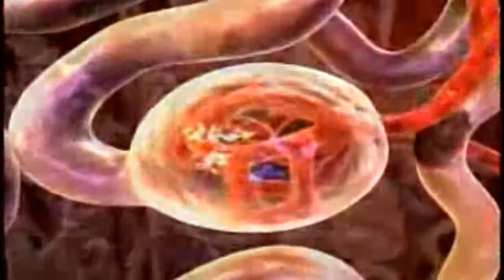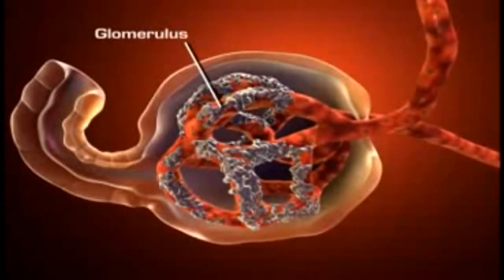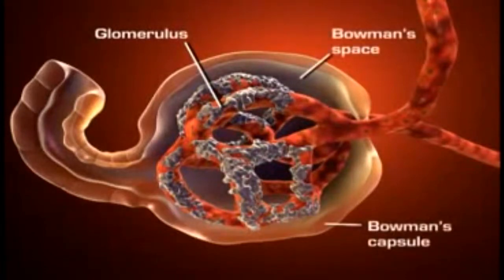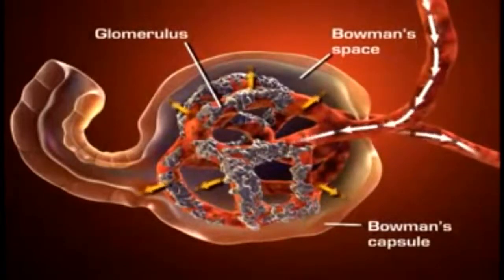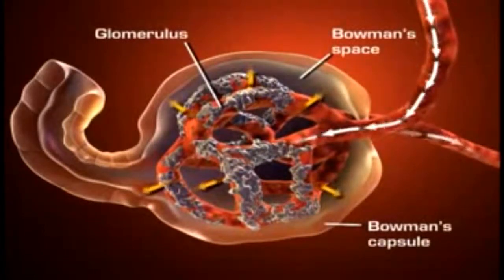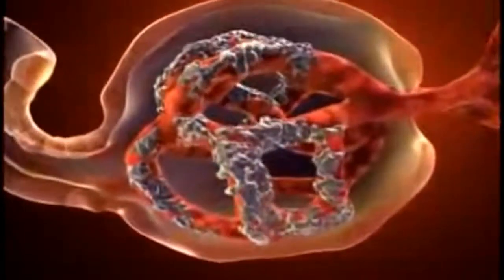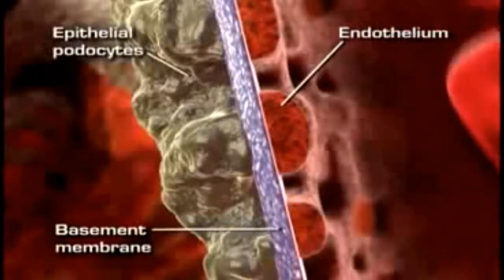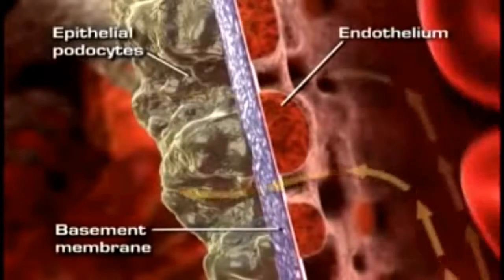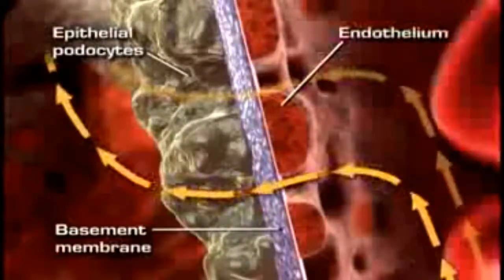Each nephron consists of a glomerulus and a system of tubules. The glomerulus is a unique high-pressure mass of capillaries that filters the blood. The glomerulus is encased in a thin, double-walled capsule called Bowman's capsule. The space inside the capsule and surrounding the glomerulus is called Bowman's space. Plasma-like fluid is filtered from the capillary blood into Bowman's space through the glomerular filtration membrane, which consists of three layers of capillary wall: the endothelium, the basement membrane, and the epithelium. This membrane allows some particles from the blood to pass through, but not all. The fluid filtered into Bowman's space is called filtrate and forms the primary urine.